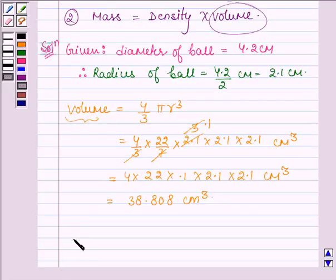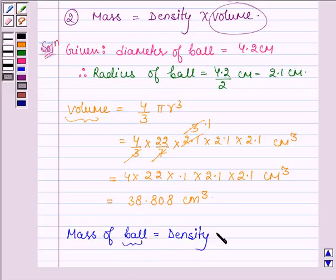Now we have to find the mass of the ball and by a key idea we know that mass of the ball is given by the product of the density of the material of which the ball is made into the volume of the ball.